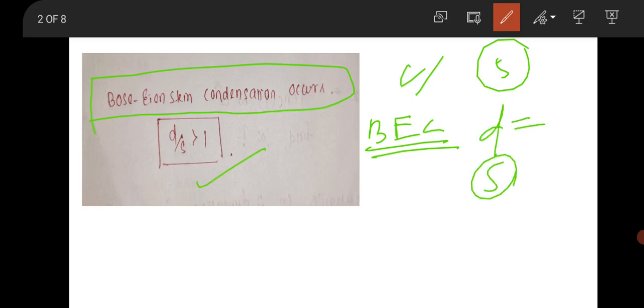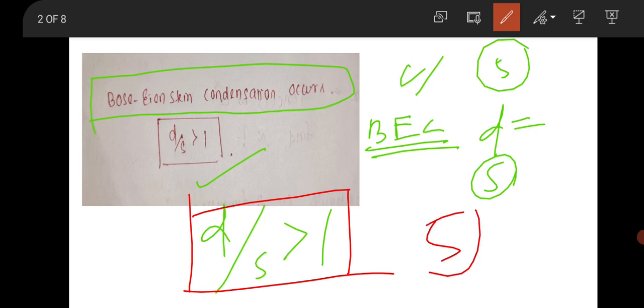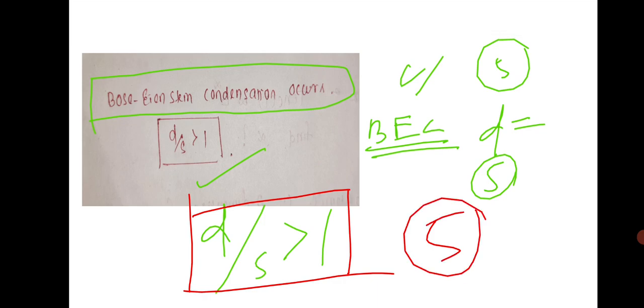The condition for Bose-Einstein condensation is d/s greater than 1. So this option will be correct: d/s is greater than 1. This question was for 5 marks.